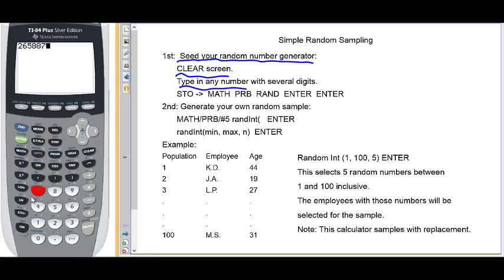Immediately press store, then math, then over to probability. Number one stands for random. Hit enter twice.